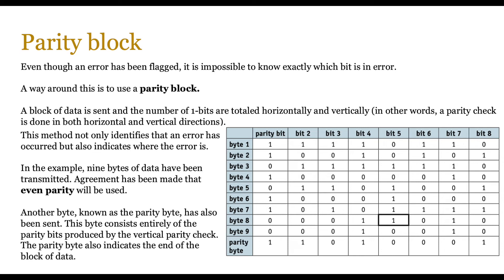This particular method that we're going to talk about not only identifies that an error has occurred but also indicates where the error is. So the nine bytes of data that have been transmitted in the example on screen, the agreement has been made that even parity will be used. Another byte known as the parity byte has also been sent.